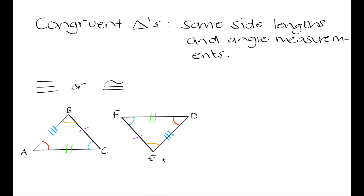If we actually just flipped triangle DEF 180 degrees, we will see that we get exactly the same as triangle ABC. Triangle DEF is just a rotated version of triangle ABC. So that's an important thing to note when looking for congruency — the triangles might not be in the same orientation. You might have to flip or rotate them to notice that you have corresponding sides and angles that are equal.